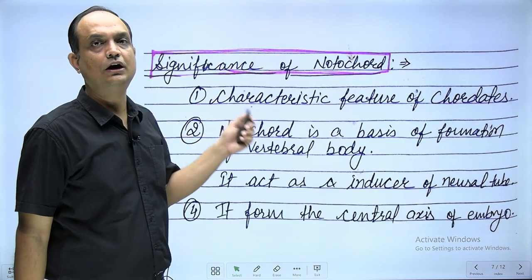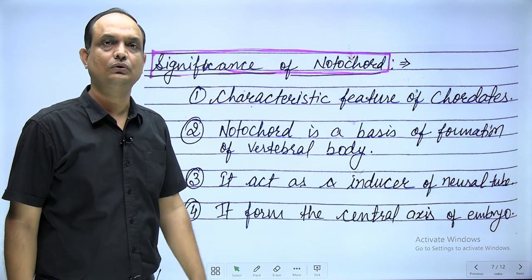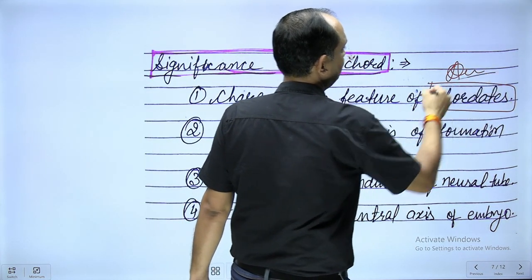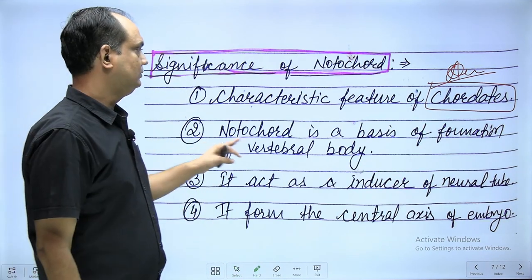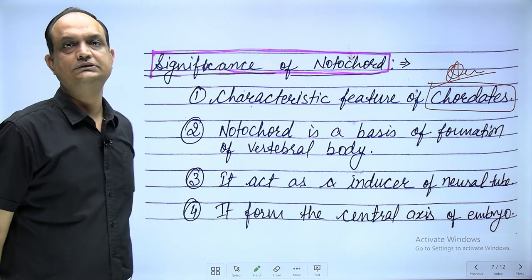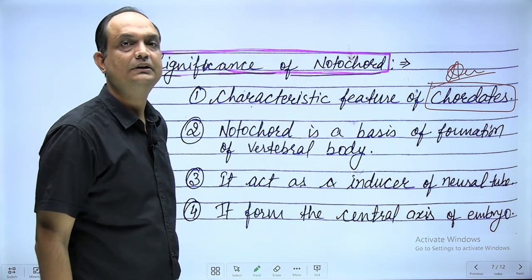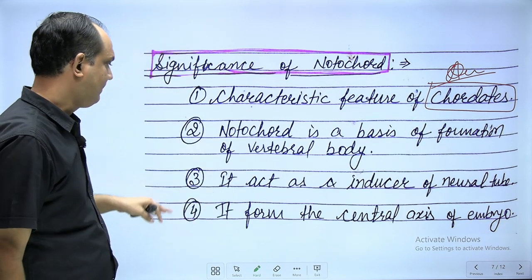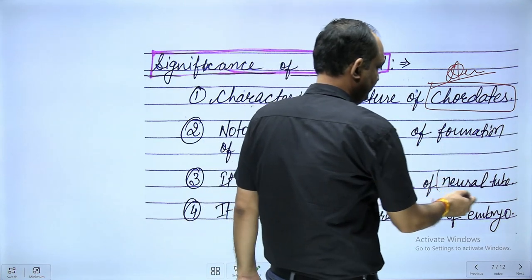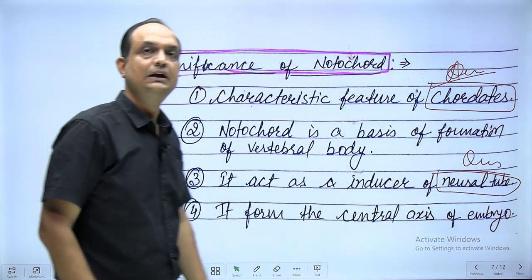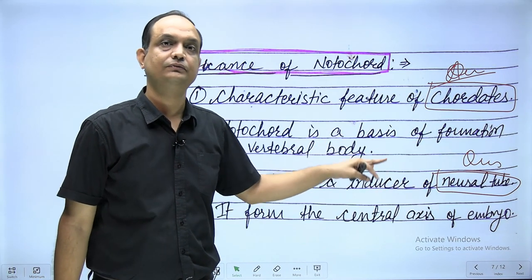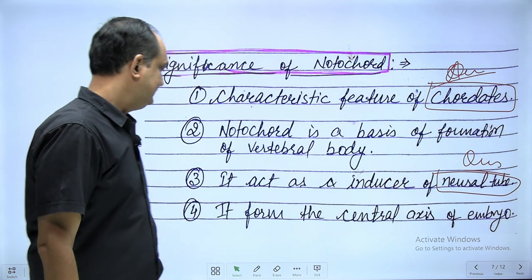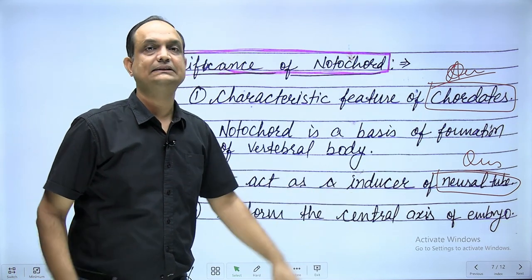Now, the significance of notochord: it is important in phylum Chordata — the word 'chordate' comes from the notochord. It is the basis of vertebral body formation, deciding the midline dorsal axis, though it does not itself form vertebral bodies (except contributing to a small part of the intervertebral disc). Critically, the notochord acts as an inducer of the neural tube; without notochord formation, the neural tube will not form. It also defines the central axis of the embryo.